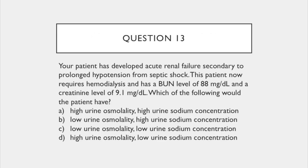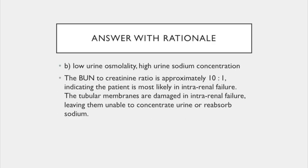Question 13. Your patient has developed acute renal failure secondary to prolonged hypotension from septic shock. This patient now requires hemodialysis and has a BUN level of 88 and a creatinine level of 9.1. Which of the following would the patient have? A. High urine osmolality, high urine sodium concentration. B. Low urine osmolality, high urine sodium concentration. C. Low urine osmolality, low urine sodium concentration. Or D. High urine osmolality and a low urine sodium concentration. The answer is B: low urine osmolality, high urine sodium concentration. The BUN to creatinine ratio is approximately 10 to 1, indicating that this patient is most likely in intrarenal failure. The tubular membranes are damaged in intrarenal failure, leaving them unable to concentrate the urine or reabsorb the sodium.